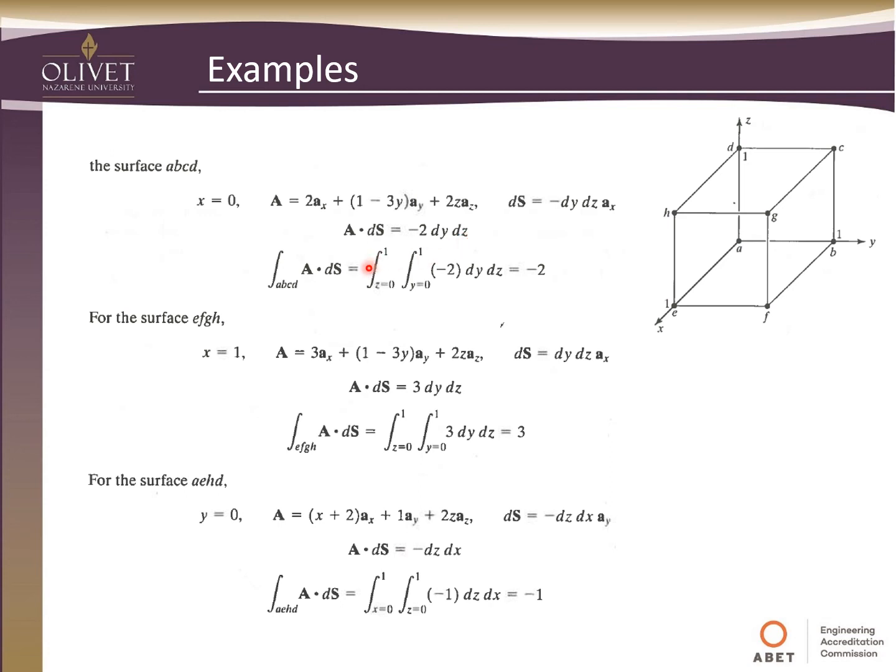And so we already had our A vector here. And so when we evaluate A dot dS, since we only have an a_x term here, the only term from the vector field that will have any effect on us at all is this 2a_x. And so when we dot that, we get negative 2 dy and dz. So now we just simply integrate that over z and y. Z goes from 0 to 1. Y goes from 0 to 1. And we get negative 2.